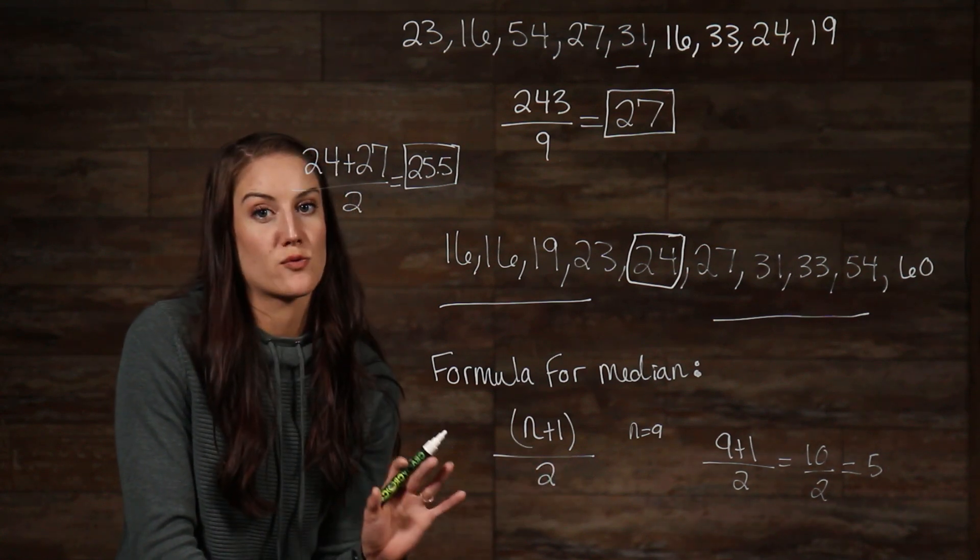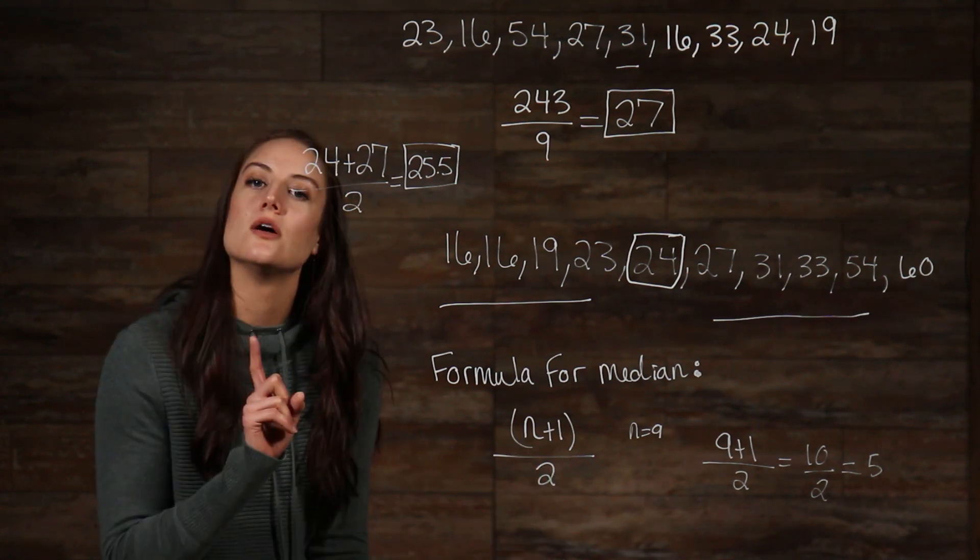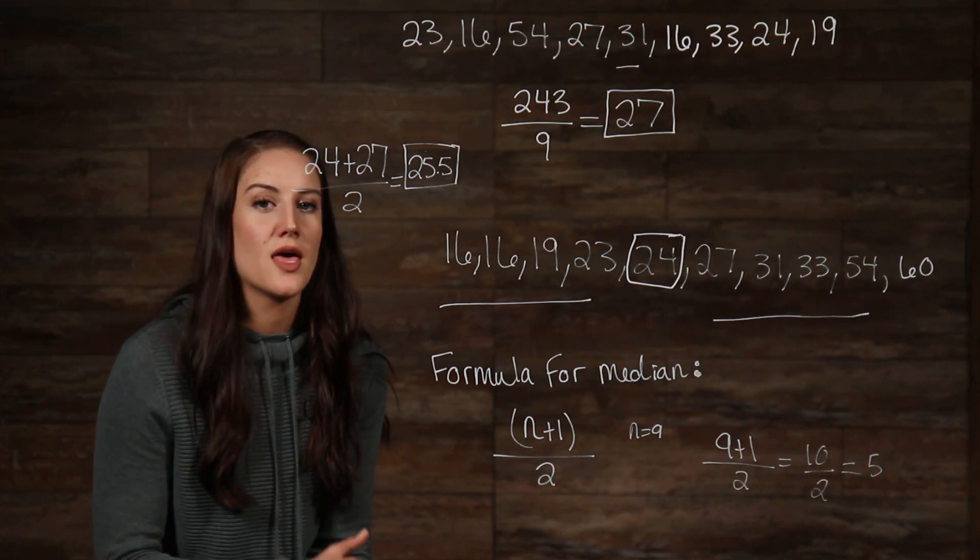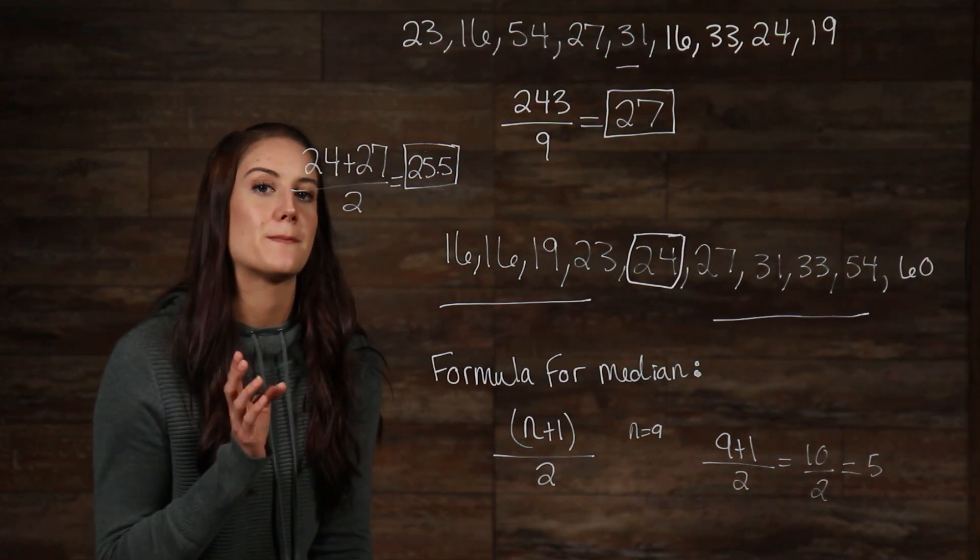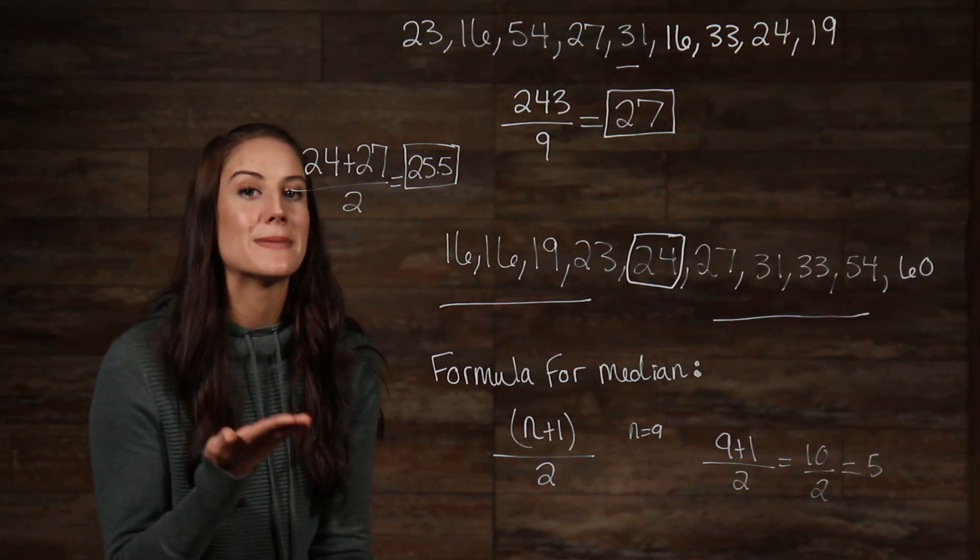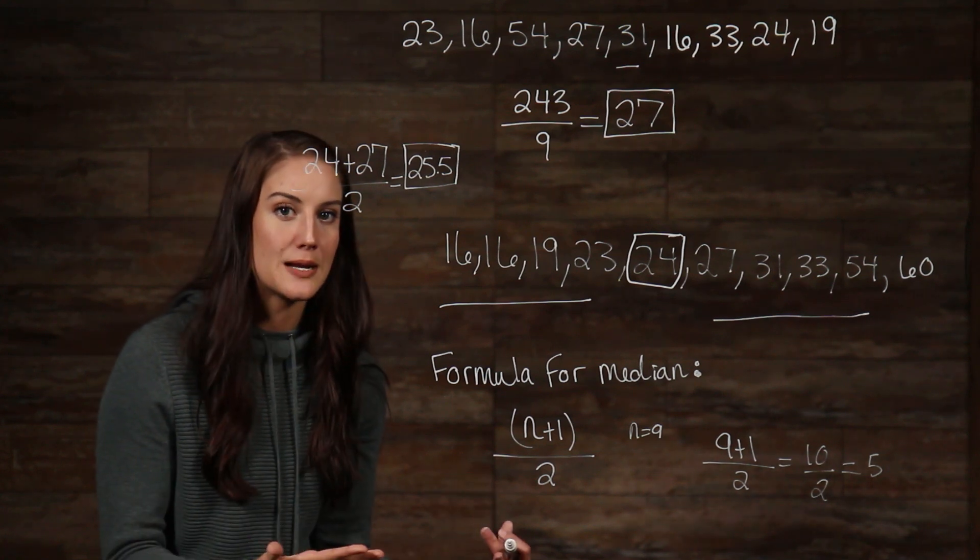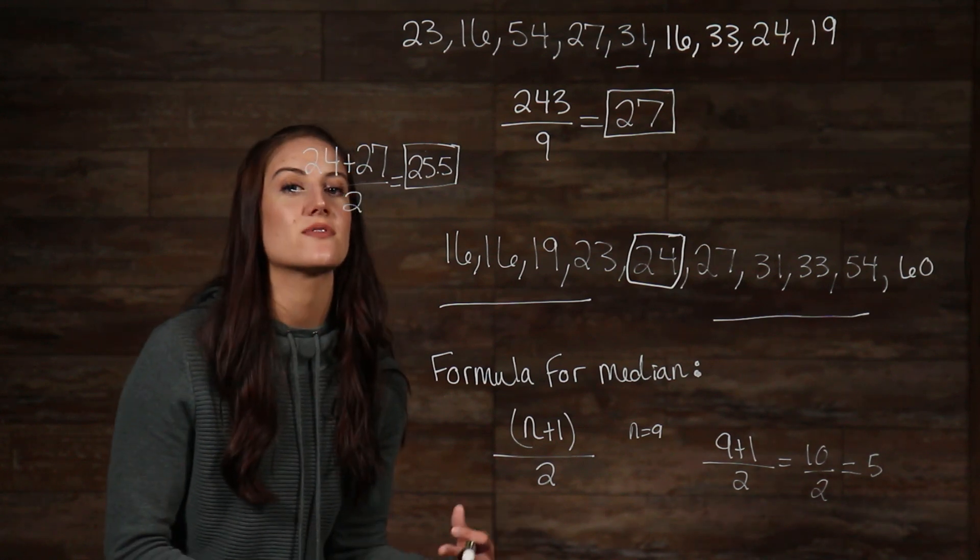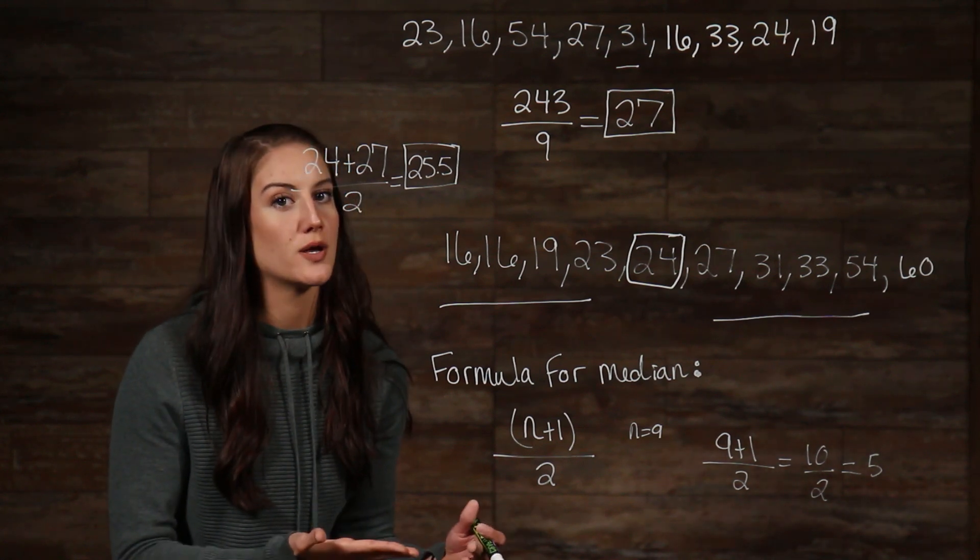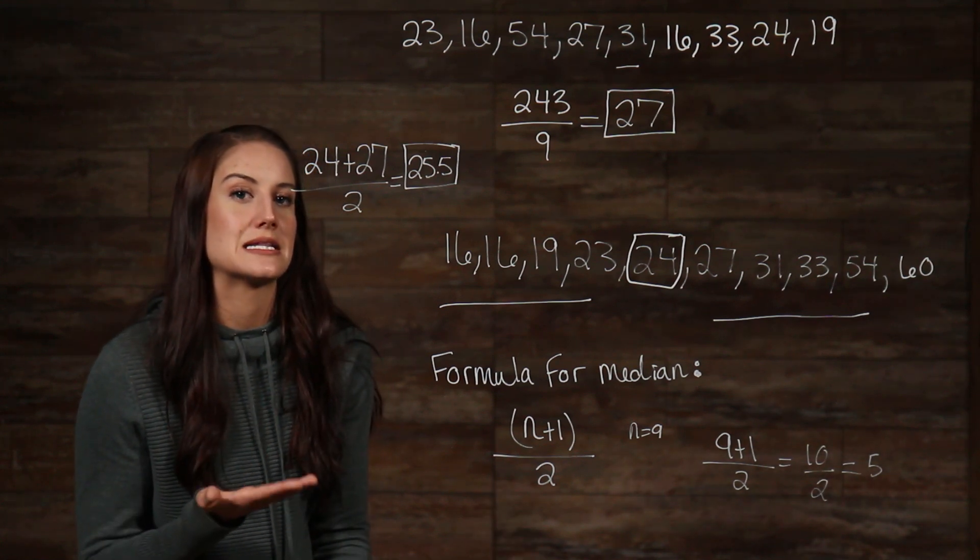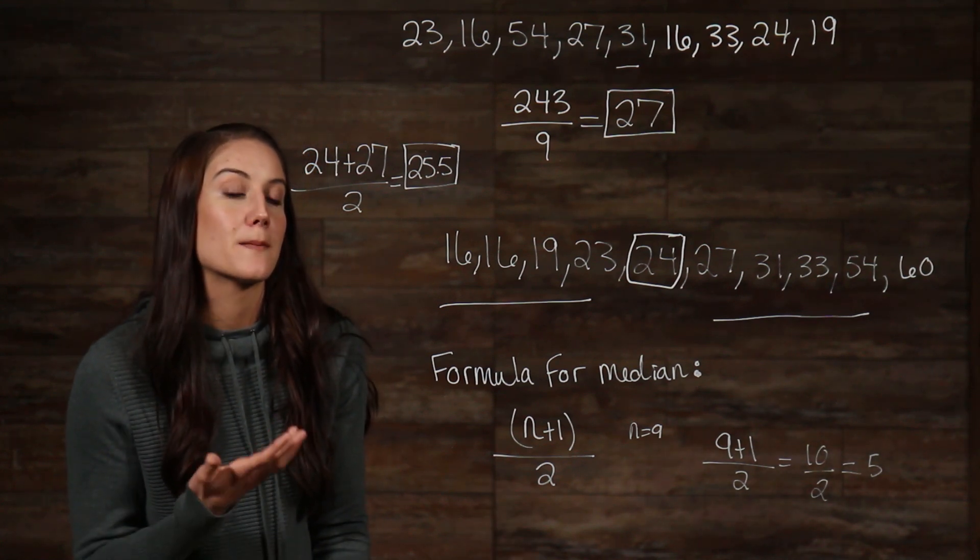Now, if there are no numbers that are repeated, then there is no mode. Also, let's pay close attention to our definition. The mode is the number that appears the most amount of times. So, it may be that you have a number repeated, but there is another number that is repeated more times. The number that is repeated more is the mode, but you can have multiple modes. If two numbers are repeated the same amount of times, they are both modes.